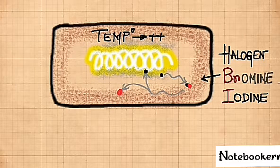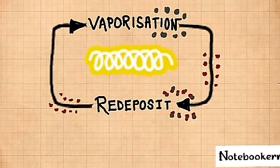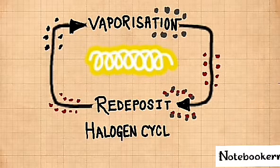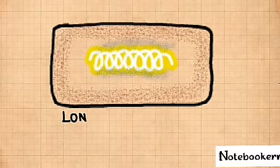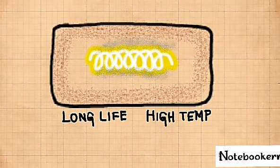In this way, the vaporization and redeposition of tungsten takes place in a cycle called the halogen cycle. Thus, iodine or bromine, which is halogen material, causes the filament to work for a longer period and at high temperature.